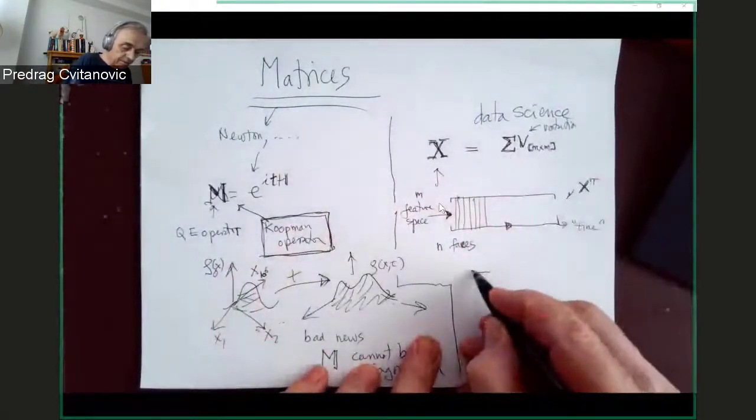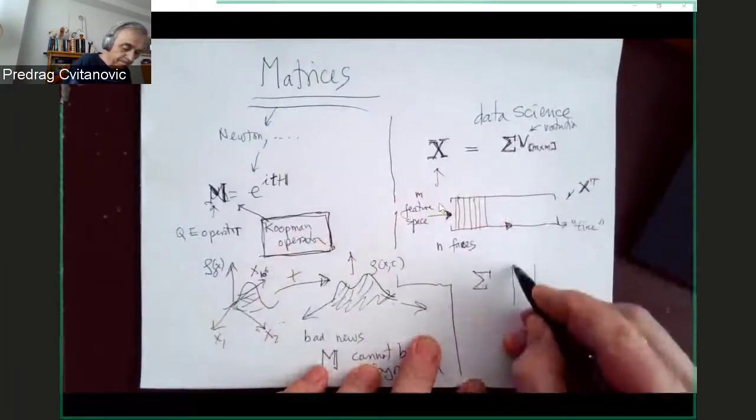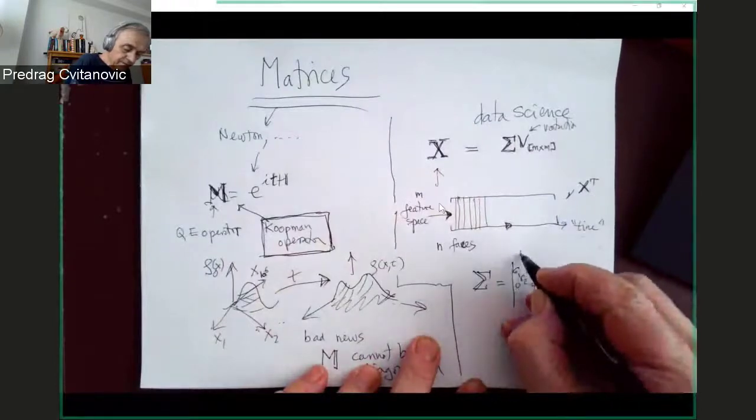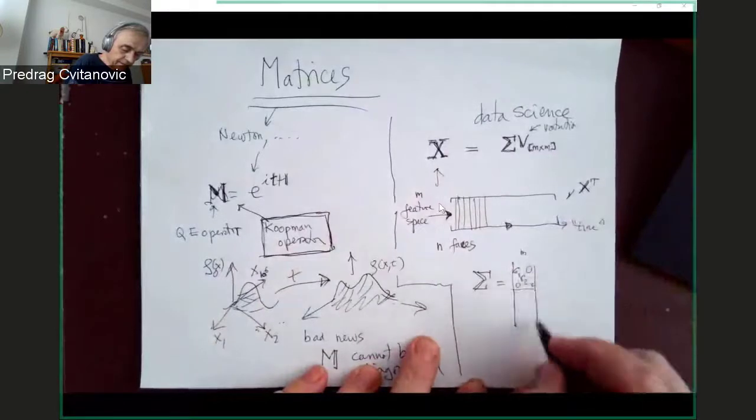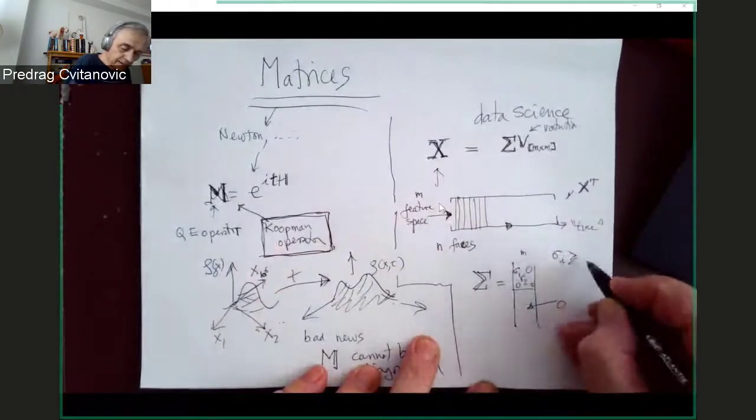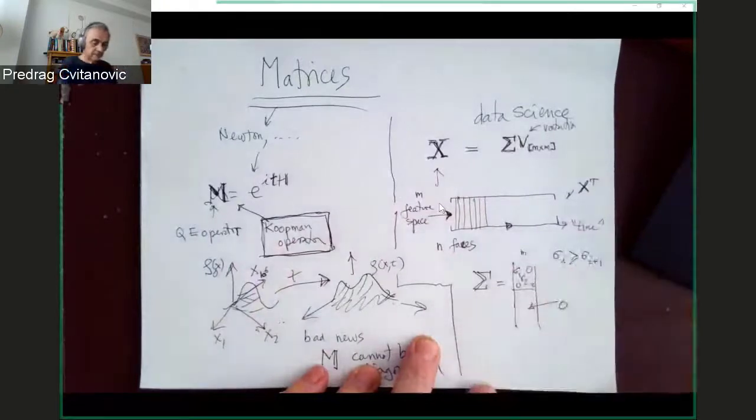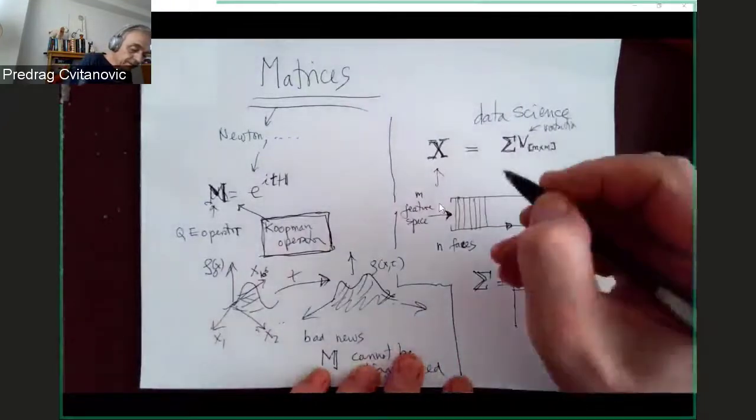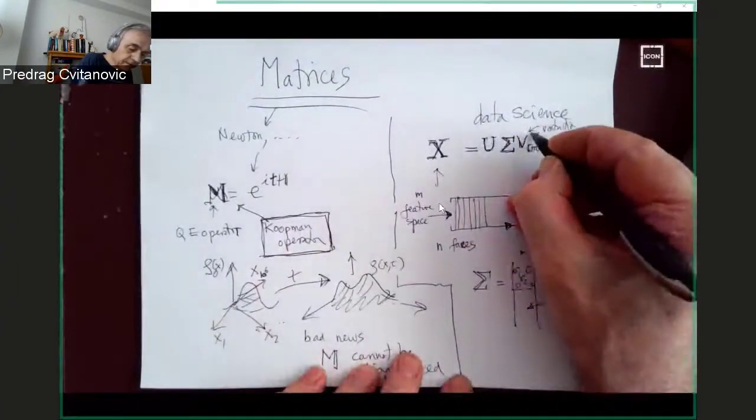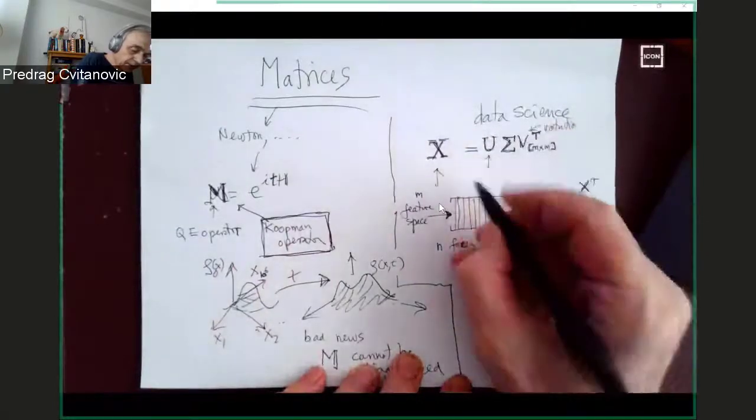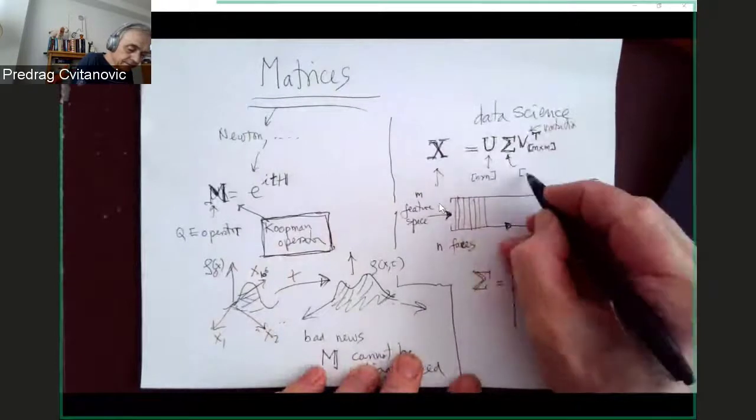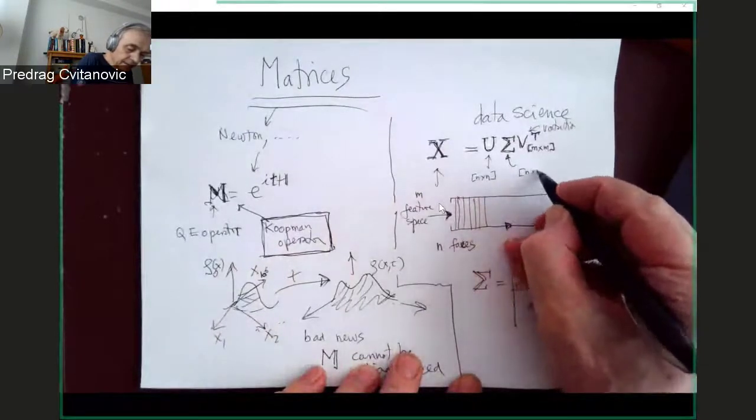Then, in the correct coordinates, this data matrix is actually diagonal. So, it has sigma as a form. Sigma one, sigma two, zero, zero. And because this is a size M, and this is very the rest is just zeros. For sigma I is larger or equal to sigma I plus one. So, that's this thing. And then there is another matrix, U, where I rotate back. So, this is transposed in this notation. So, this is a huge matrix, N by N. This one is rectangular. N, M, like that.